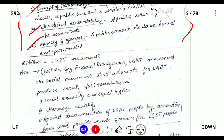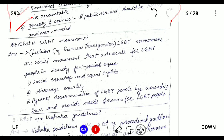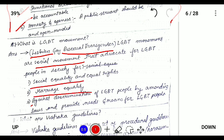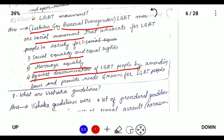What is the LGBT movement? The LGBT movement refers to the Lesbian, Gay, Bisexual, and Transgender movement. It is a social movement that provides for social equality, marriage equality, and is against discrimination. The third gender has been facing many discriminations, and in order to prevent this, the LGBT movement was launched.